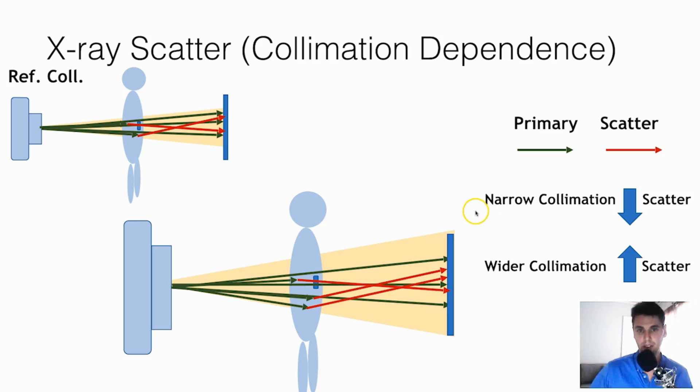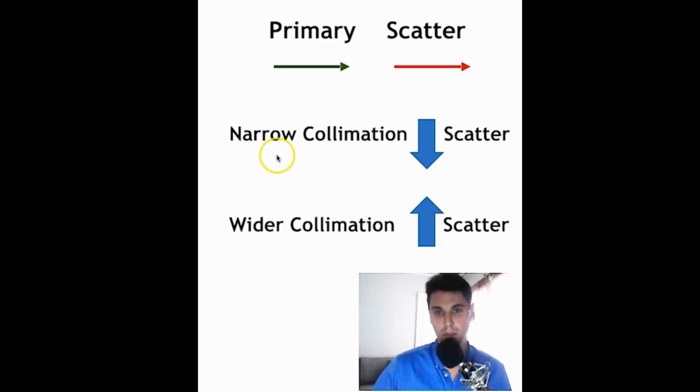So just we want to remember as a high-level takeaway, more narrow collimation, smaller region irradiated will reduce the scatter. And when we have to go to wider collimation, this leads to an increase of scatter.